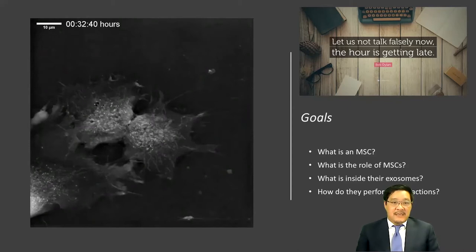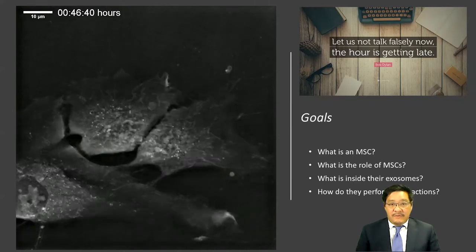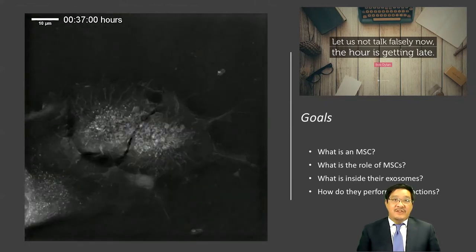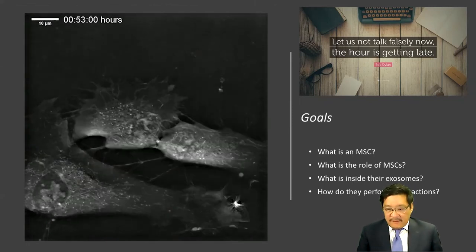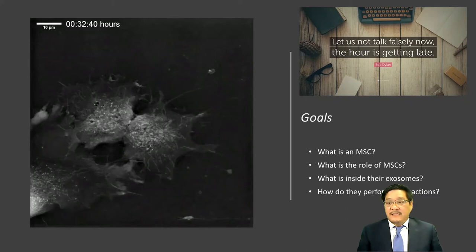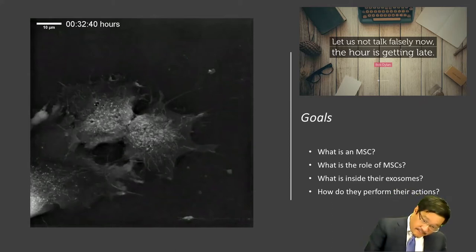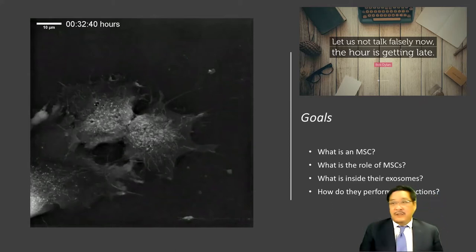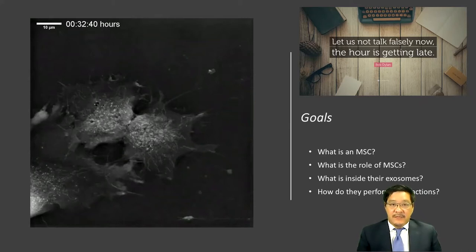In the final edit you'll see that this picture is actually a GIF and these critters are moving around like little amoebas — they have agency, so it helps to think of them as little musicians, to extend that musical analogy. Goals of today's talk will be to discuss what an MSC is, what its role is, what's inside their exosomes, and how they perform their actions. All speculative — nobody knows. I certainly am not an expert; I am just translating what I see.